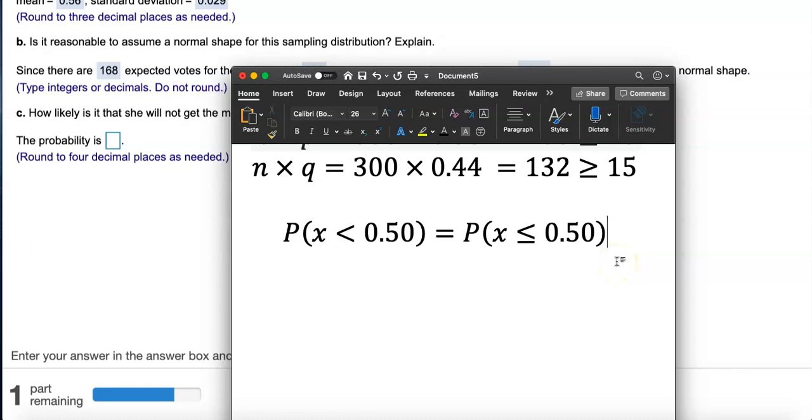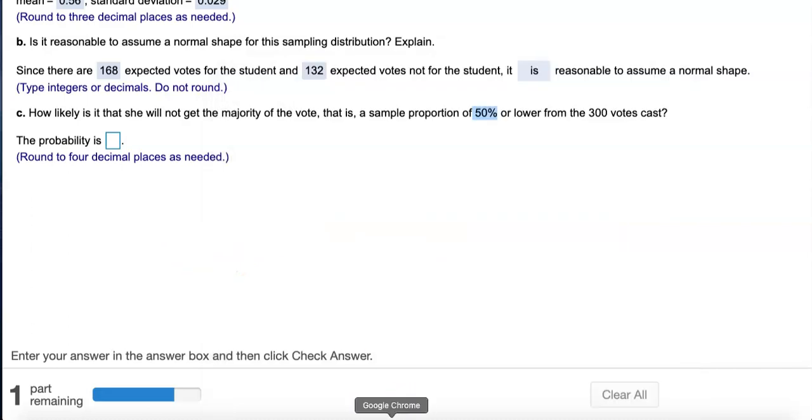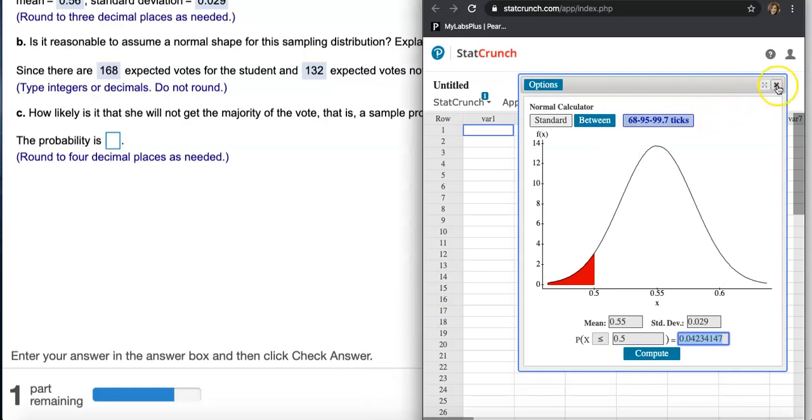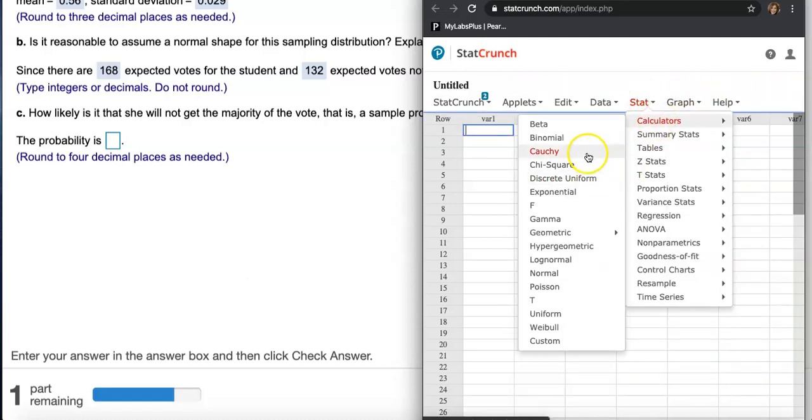I'm going to find this on my normal distribution calculator which can be found in StatCrunch. Go to StatCrunch please. I was playing with it earlier, but let me start from the beginning. Go to Stat, Calculators, and go to Normal because in part B we said it's okay to assume normal.